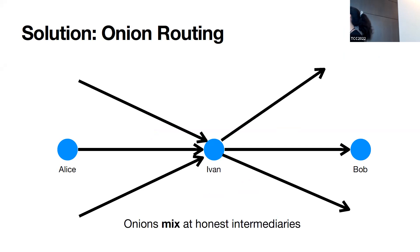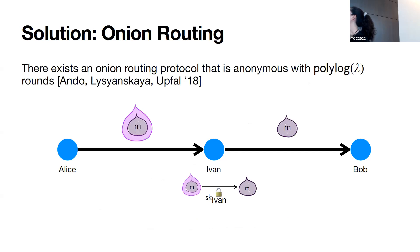The reason for layered encryption is to enable mixing at honest intermediary servers — the adversary shouldn't be able to correlate incoming traffic with outgoing traffic. Since the outer layer before Ivan looks uncorrelated from the next layer leaving Ivan, the adversary can't tell who Alice is talking to. But crucially Ivan needs to be honest, because if the adversary knows his secret key it can peel the onion. Prior work showed there exists an onion routing protocol that's anonymous with a polylogarithmic number of rounds, and this is tight — a polylogarithmic number of rounds is necessary.